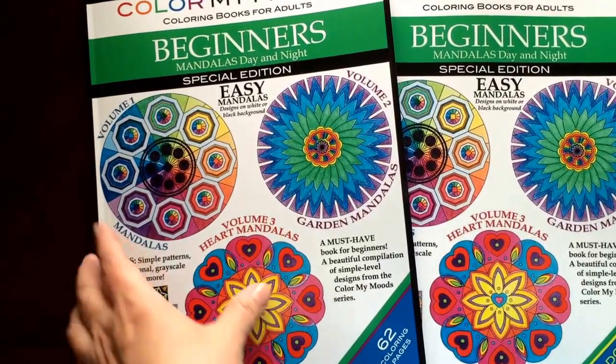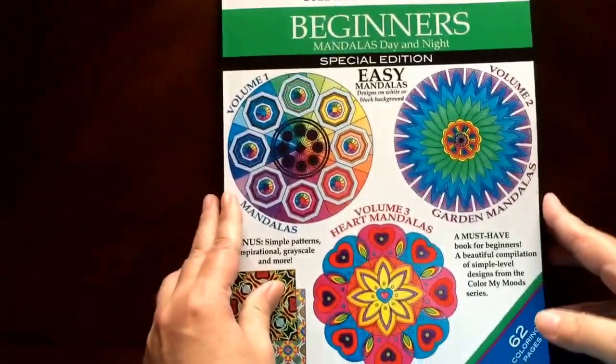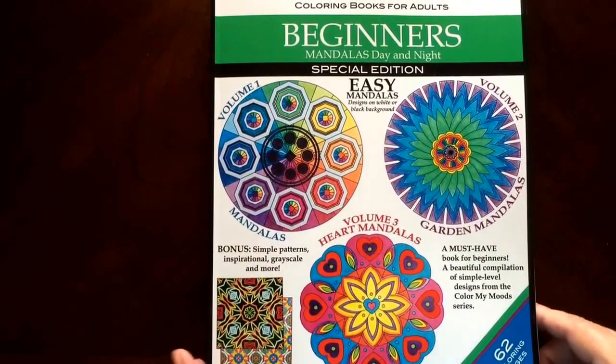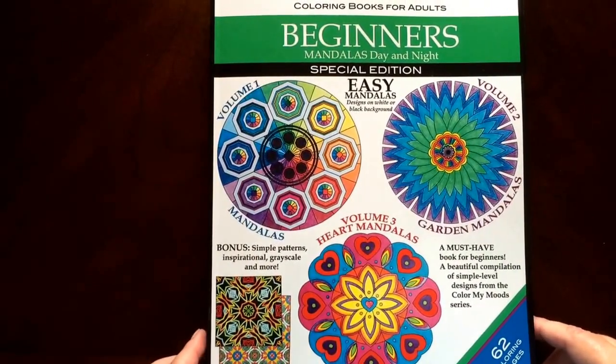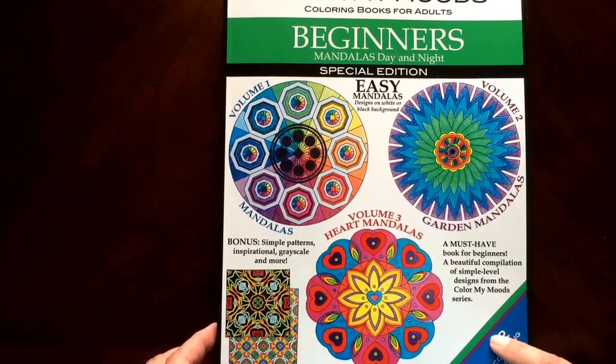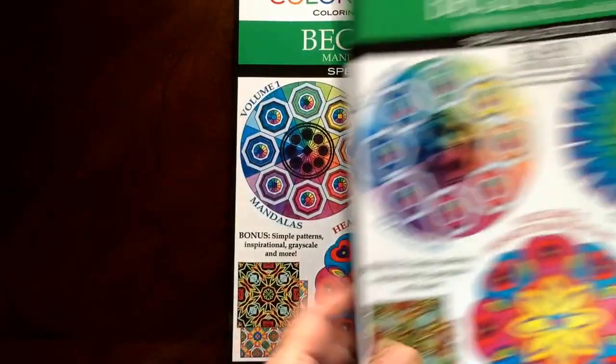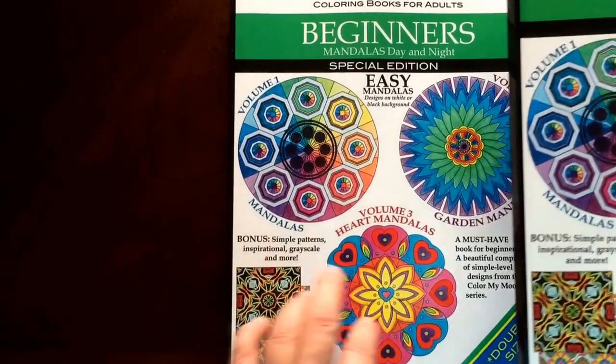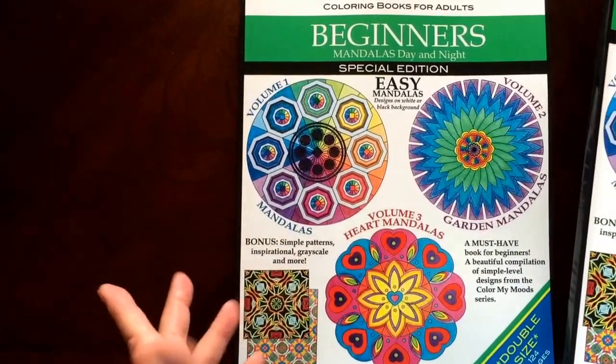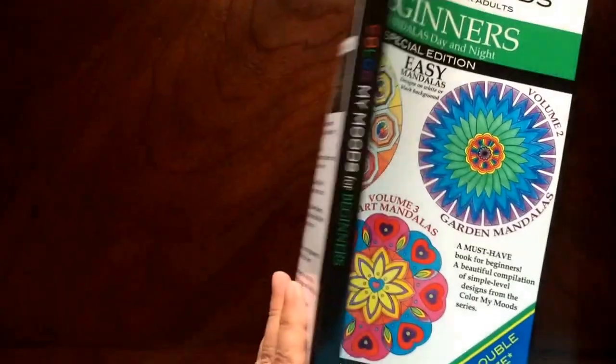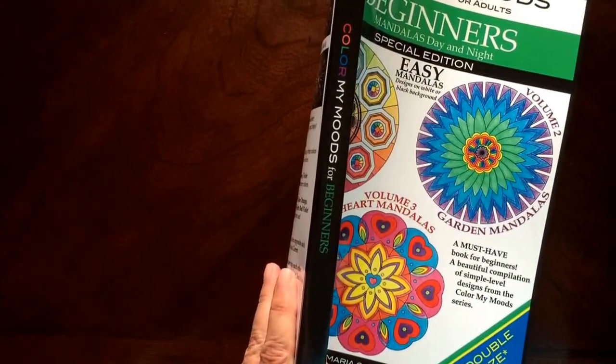There's actually two books here. This one here is a compilation of all of the Easy Mandalas from her first three books, plus some bonus patterns. This one has 62 pages, and this one here is this one times two. So there's two books in one for a few dollars more. That way you get a lot more practice. Look at how thick that one is.